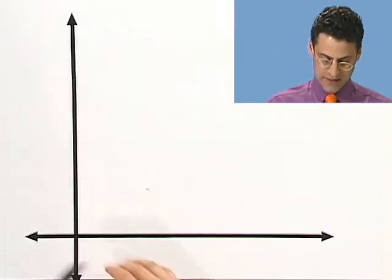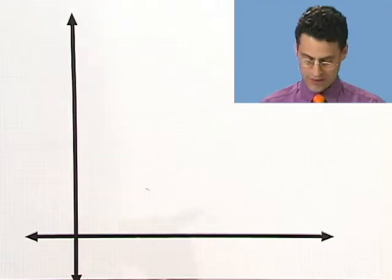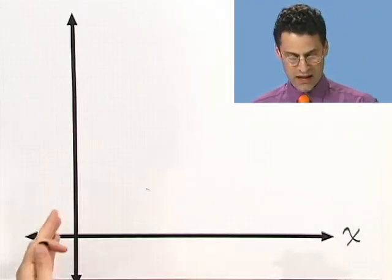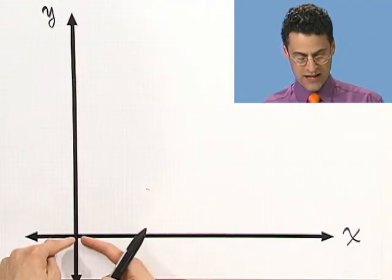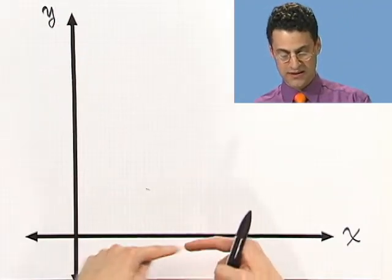OK, well, I wanted to quickly give you a real run-through of plotting points on a graph, where you have an x-axis and a y-axis. Now, here's some axes right here. So you can see that the horizontal one we usually call x, and the vertical one we call y. And we number them in a standard way. Where they intersect is the point that's zero on both of these number lines.